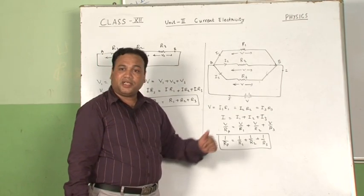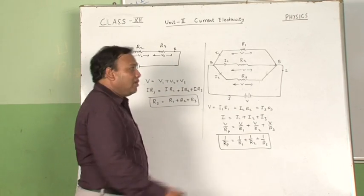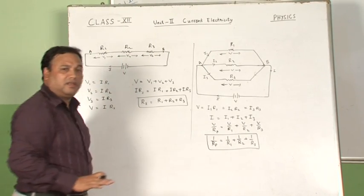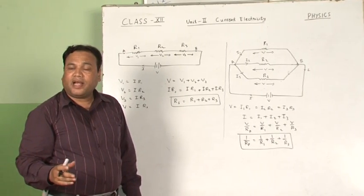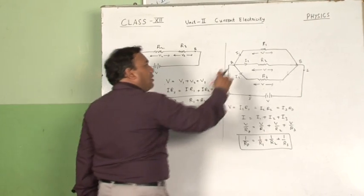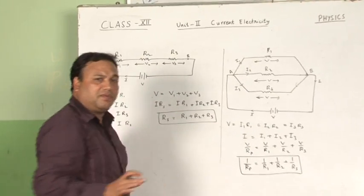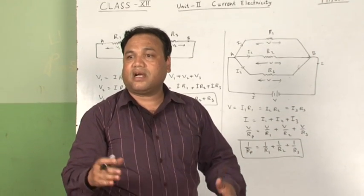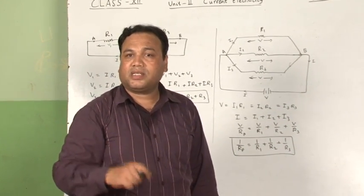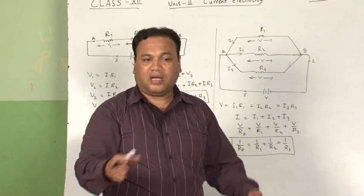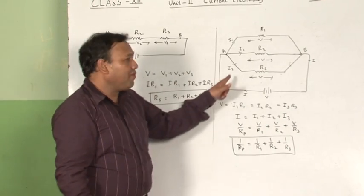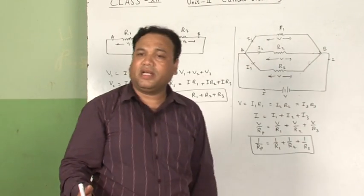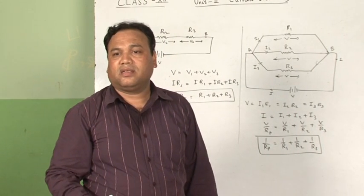The advantage of parallel combination is that if any one appliance or resistance is not working, the remaining two will work. Therefore, a switch can be connected along with each resistor, and the potential drop is the same across all resistors. This combination is used in domestic connections — household circuits use parallel combination. Many numericals are based on this, which you can practice.